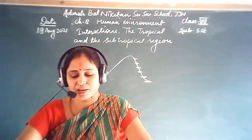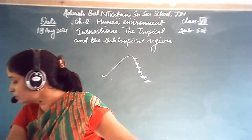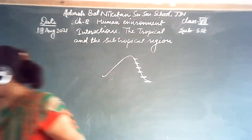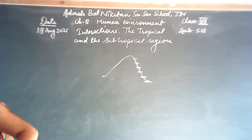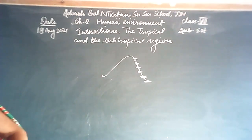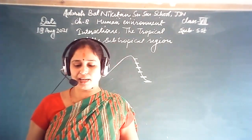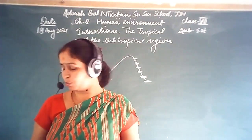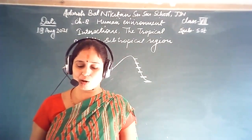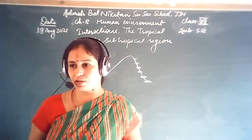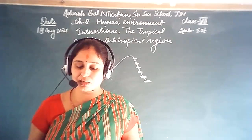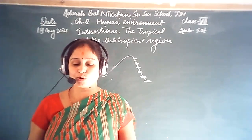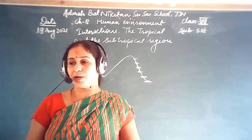The Ganga Brahmaputra Plain has several big towns and cities. The cities of Allahabad, Kanpur, Varanasi, Lucknow, Patna, and Kolkata — all with a population of more than 10 lakhs — are located along the river Ganga.